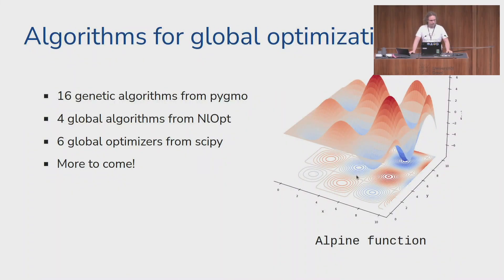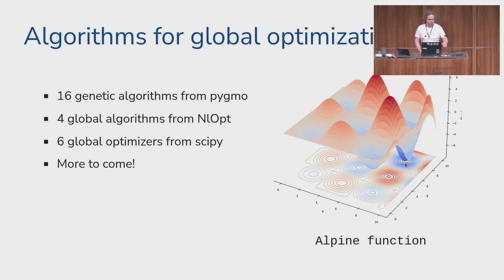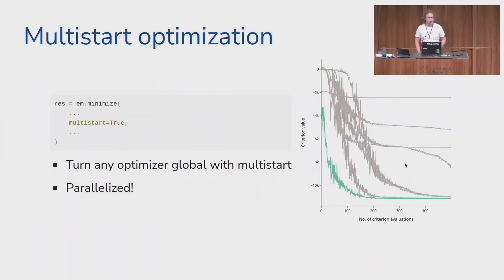SDMagic also has algorithms for global optimization. Sometimes your objective function has many peaks and valleys, and a local optimizer will end up in any one of these valleys but most likely not the global minimum. For that we have 16 genetic algorithms from pygmo, global algorithms from nlopt and scipy, and there is a lot more to come in the near future.